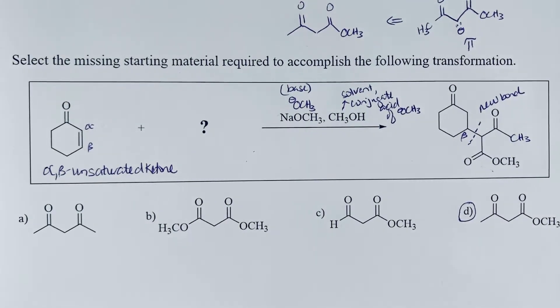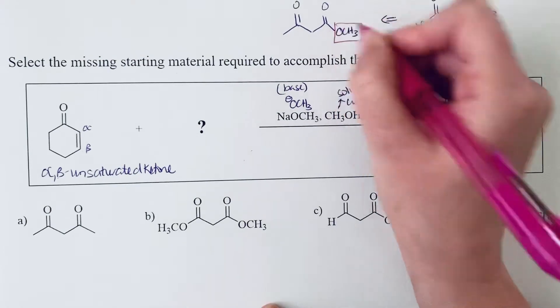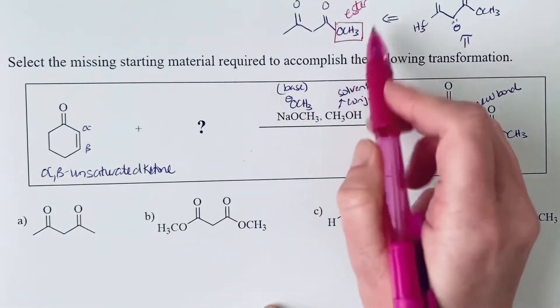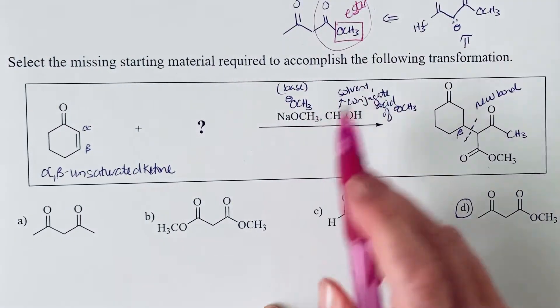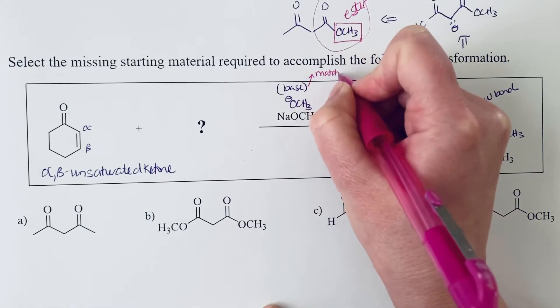But let's go ahead and draw the mechanism here. And there's a few other points to make. So notice that we have an ester. And so notice that this OCH3 of this ester functional group, so the whole thing overall is an ester. But specifically this OCH3, notice that it matches the base.